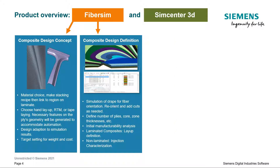That's where FiberSim can help, because it enables you to plan composite design concepts and definitions through things like drape simulations to predict fiber orientation on your molds. In this, you can reorient and add cuts as needed to alleviate fiber orientation distortions.